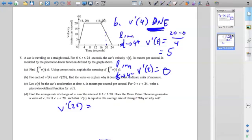So v prime of 20 is just the slope of this line, because it's a constant linear slope. We know these values, this value and this value. So we can just find the slope of that line, and that will give us the instantaneous rate of change at this point. So the slope of the line is 0, the y value, minus the first y value, 20, over 24 minus 16.